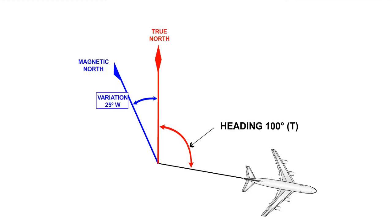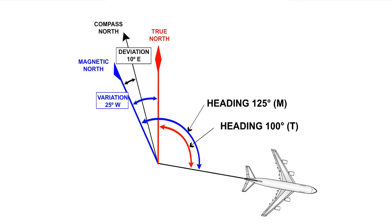Conversely, for an easterly deviation, we would subtract from the magnetic direction, as seen in the example on screen now. Remember to apply the rule to magnetic to obtain compass and not the other way round.